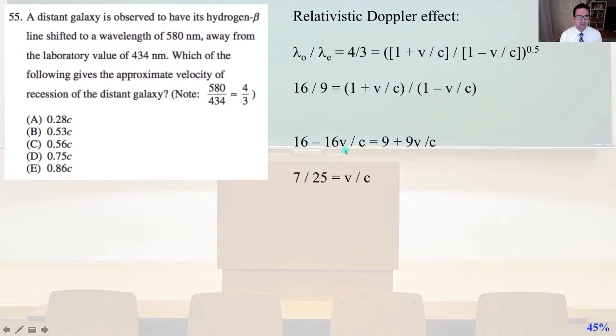Number 55, a distant galaxy is observed to have its hydrogen beta line shifted to a wavelength of 580 nanometers away from the laboratory value of 434 nanometers. Which of the following gives the approximate velocity of recession of the distant galaxy? And the GRE ETS is generous enough to give us that 580 over 434 equals about 4 thirds. So we're going to use a relativistic Doppler effect equation where lambda observed over lambda emitted equals 4 thirds equals the quantity of one plus V over C divided by the quantity one minus V over C, that whole quantity square root. So let's just square each side and squaring 4 thirds, 16 over 9 equals 1 plus V over C, that quantity divided by 1 minus V over C. So do some algebra, 16 minus 16 V over C equals 9 plus 9 V over C and that equals 7 over 25 equals V over C. 7 over 25 equals 0.28 and that is answer A.